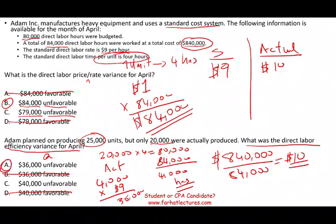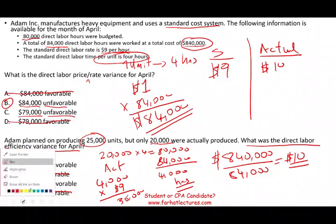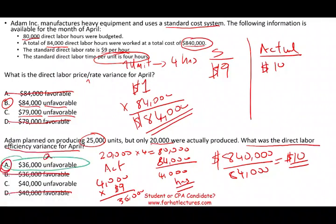This company paid more per hour for their employees and their employees spent more time than expected. The total labor variance is unfavorable — you add both variances together. The question could ask for the total labor variance, which combines both, but we break it down into price variance and efficiency variance. You have to understand how these variances work.